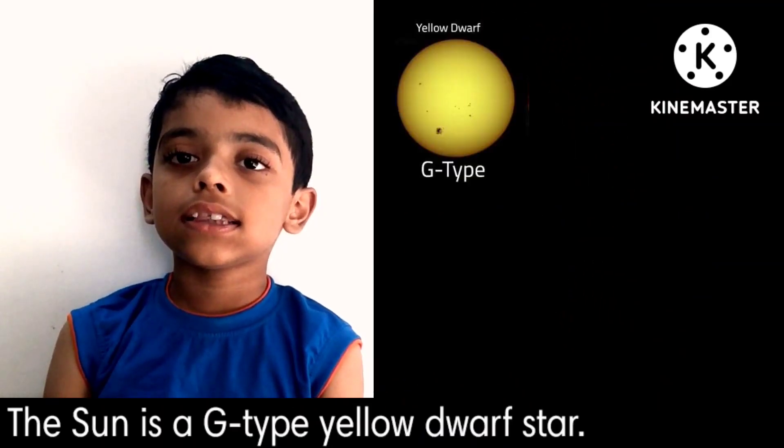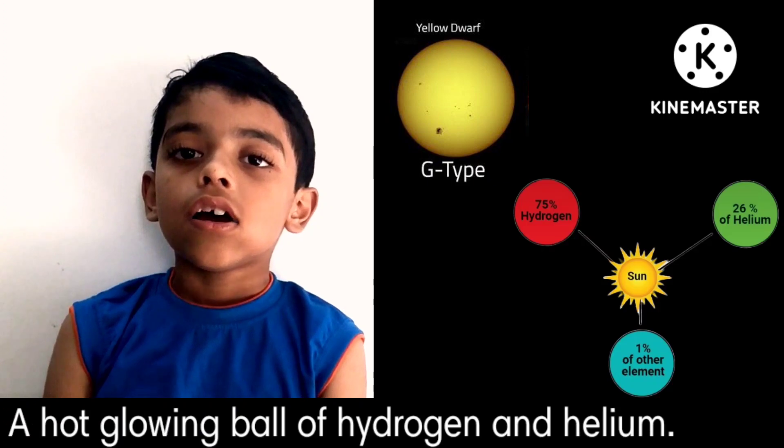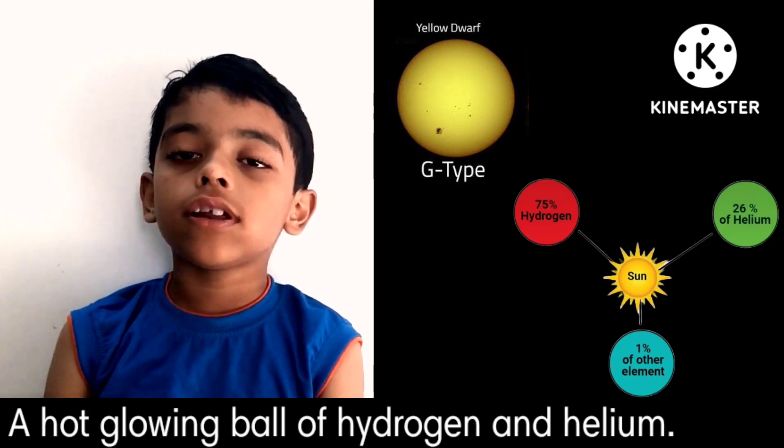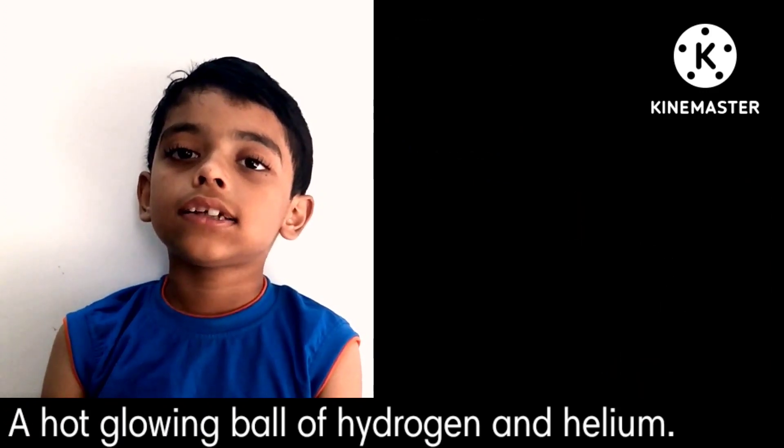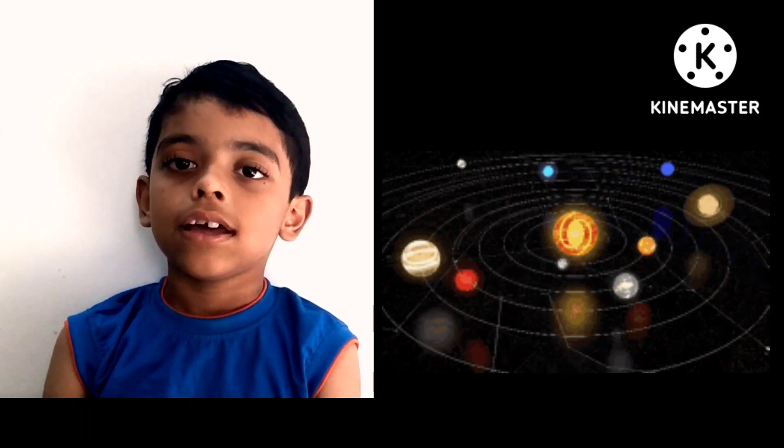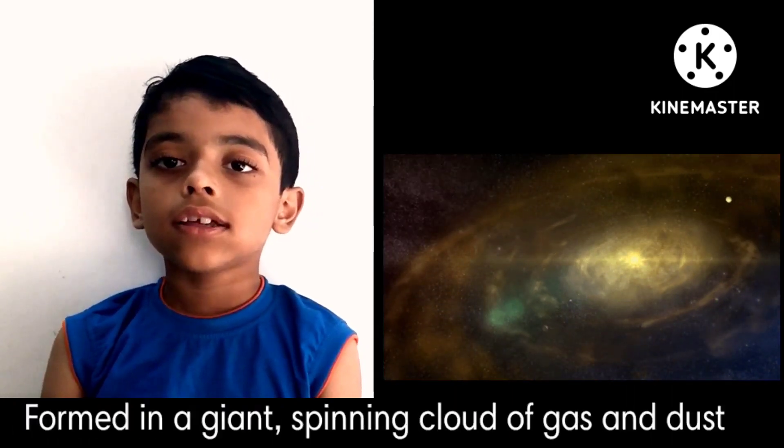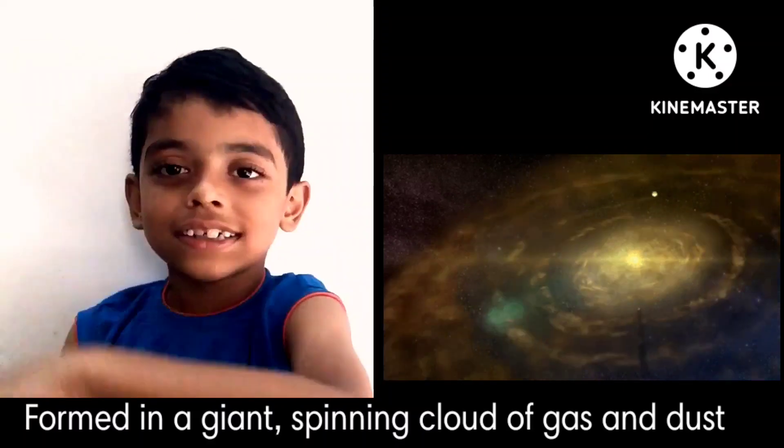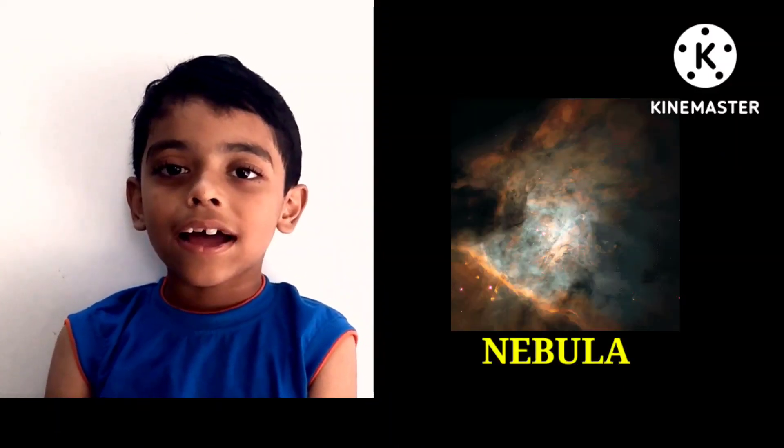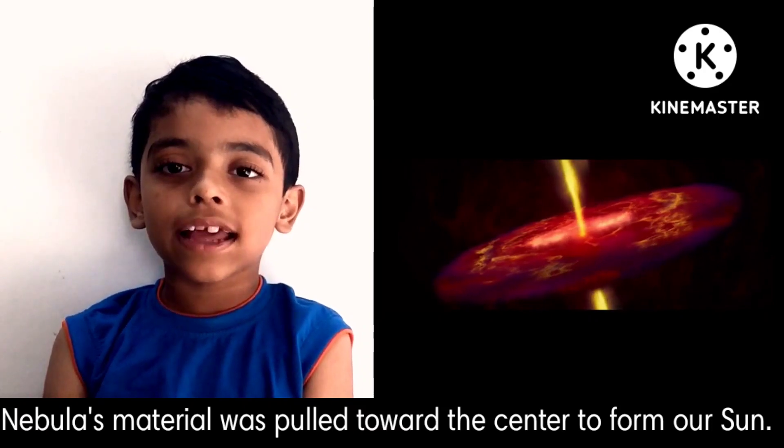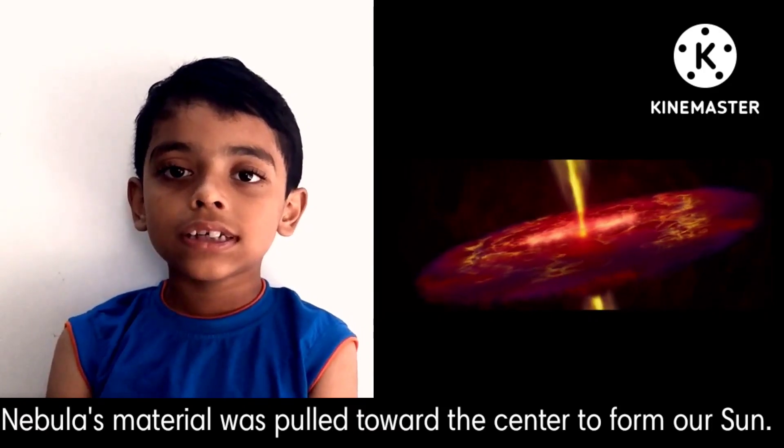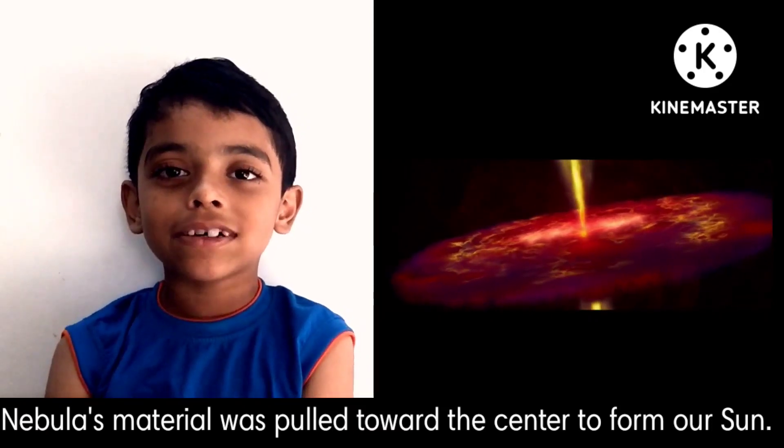Formation: The Sun is a G-type yellow dwarf star, a hot glowing ball of hydrogen and helium at the center of the solar system. It formed about 4.6 billion years ago in a giant spinning cloud of gas and dust called the solar nebula. Most of the nebula material was pulled towards the center to form our Sun.